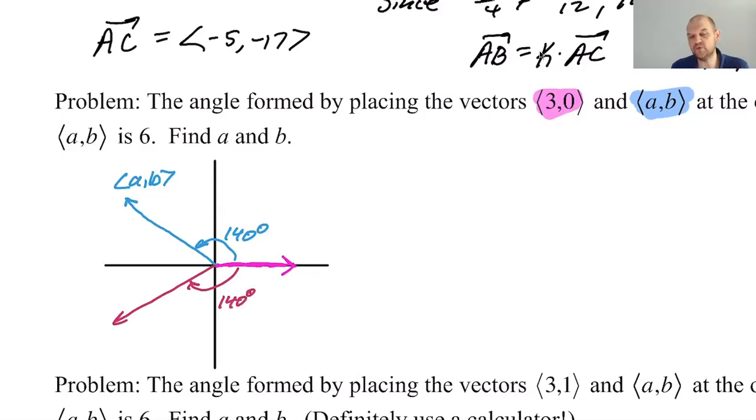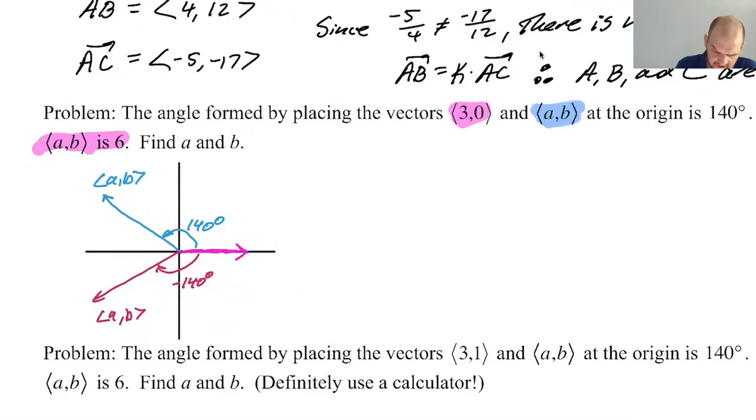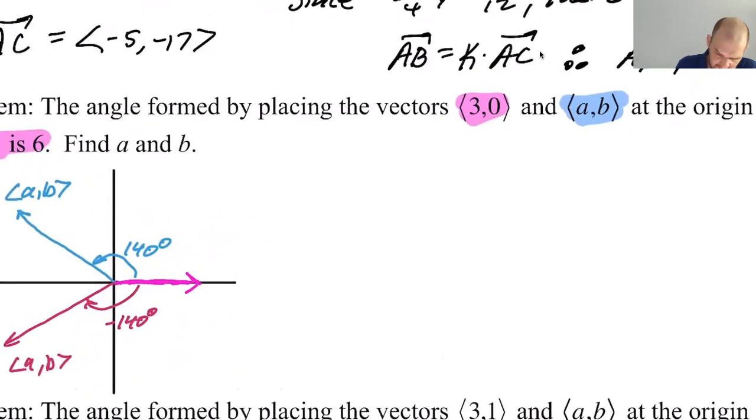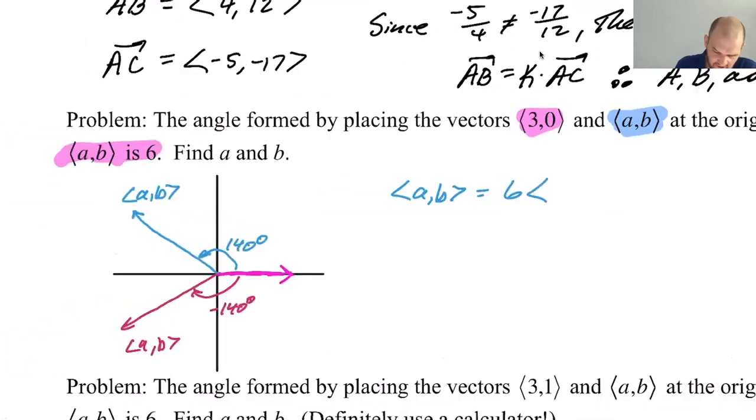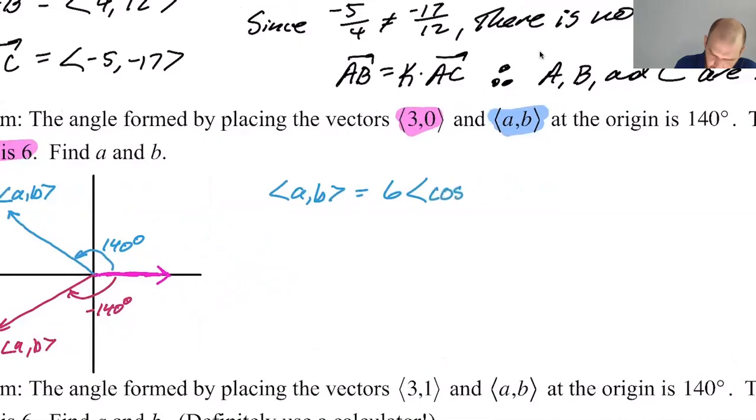But what's nice is that, so I guess this, I should say this is negative 140, we know the magnitude of the vector. So this could be a,b. I know the magnitude is six. And so since I know the magnitude is six, I can actually, I'm like already basically done with this. So what if I just say that a,b could be six, which is the magnitude. And then if I go this way, all I have to do is cosine and sine, right? So it's cosine of 140, sine of 140. And that's as good as it's going to get, we can get a decimal.